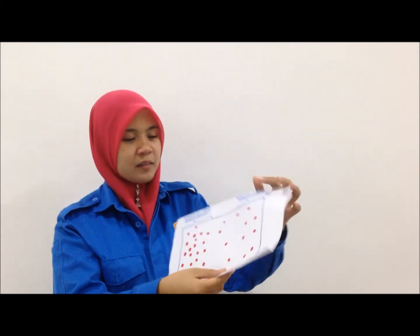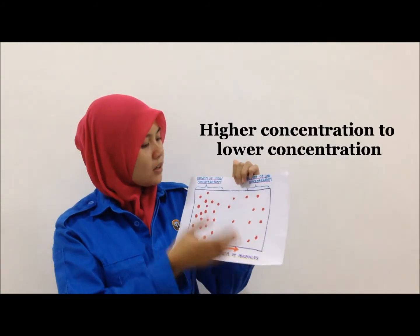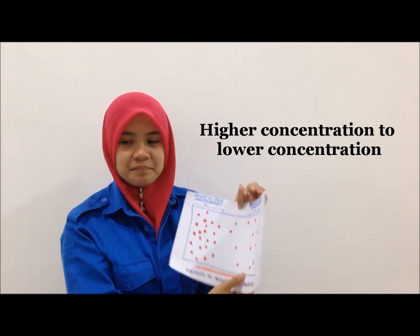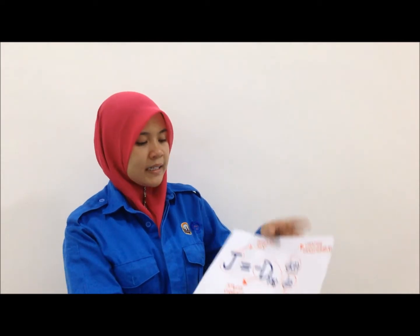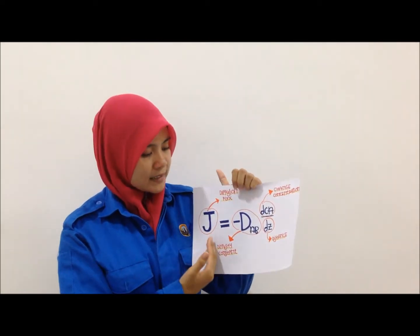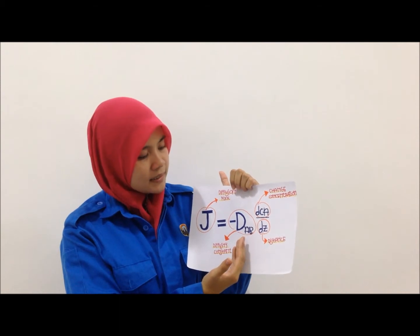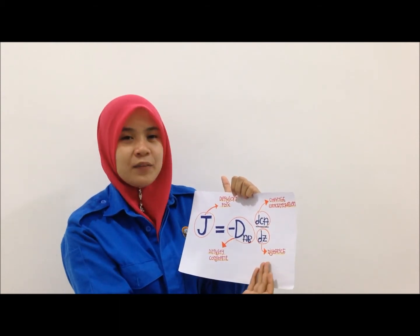Transport of molecules is from a region of higher concentration to a region of lower concentration. The general formula involved in this theory is: diffusion flux equals negative diffusivity constant times the change of concentration divided by the distance.